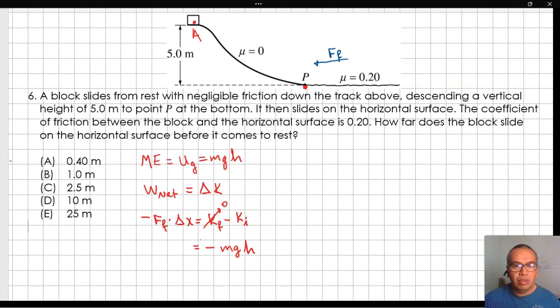The normal force is equal to the weight of the block. So our equation simplifies by canceling the mass and the gravitational acceleration.